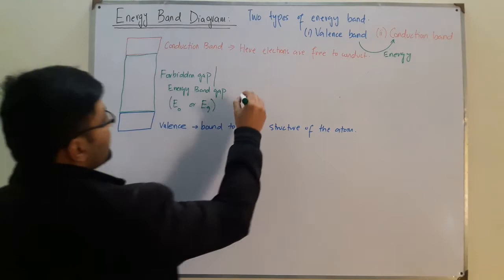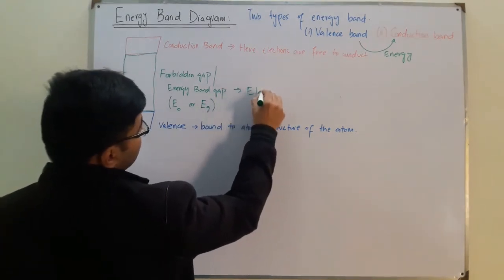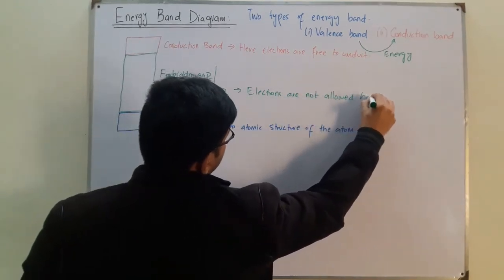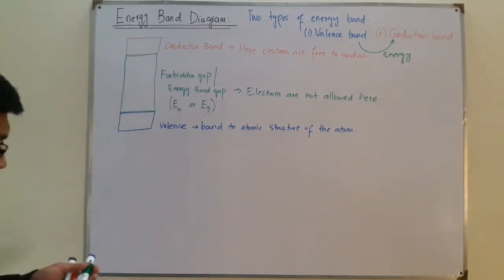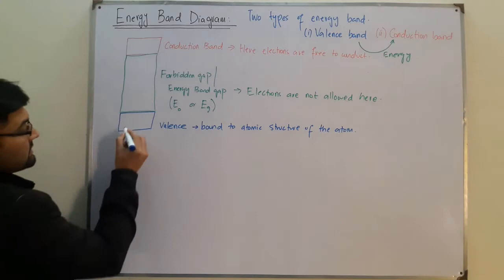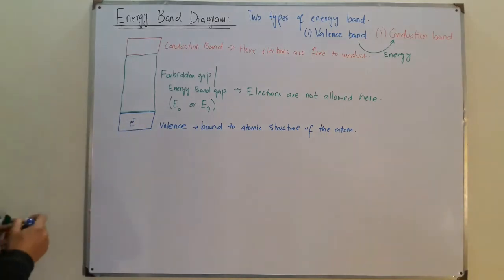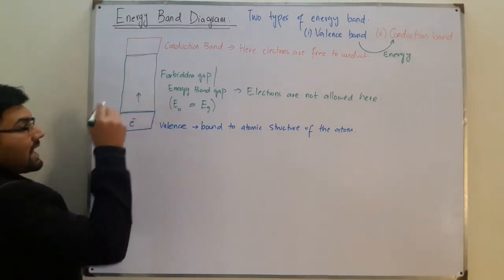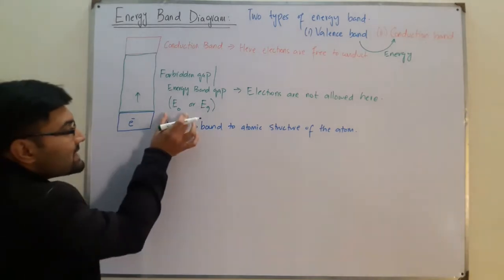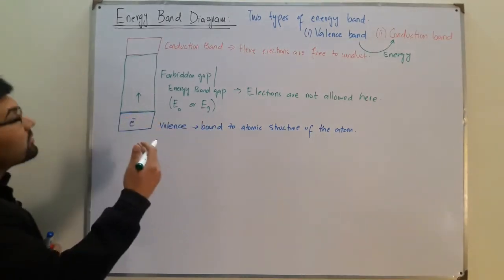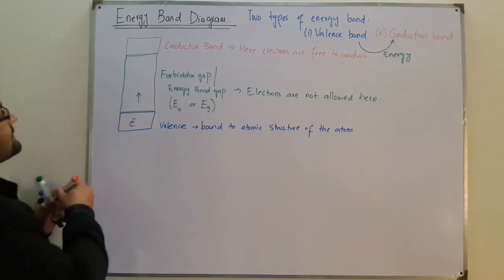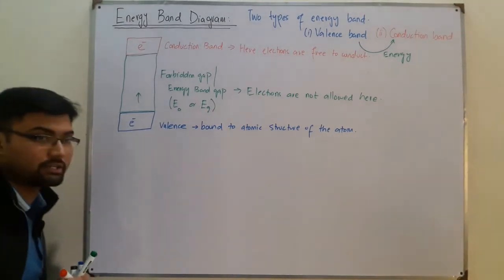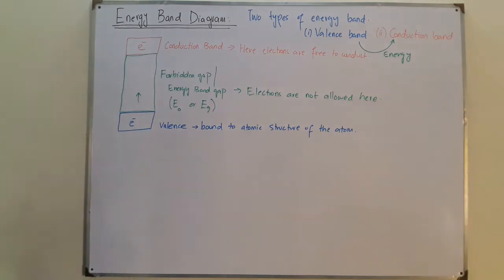If an electron is present in the valence shell, you must give it sufficient energy to overcome this energy gap — that is, energy greater than E₀ or Eg — to cross the forbidden gap, reach the conduction band, assume the free state, and start conduction.